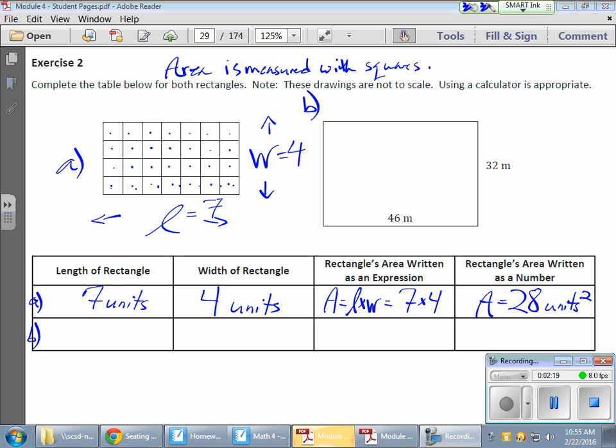Now doing the same thing for the next rectangle—here's my length, here's my width, and they gave me a unit which is nice. My length would be 46 meters and my width would be the 32. So my expression, once again, is length times width, which means I'm going to take my 46 and multiply it by my 32.